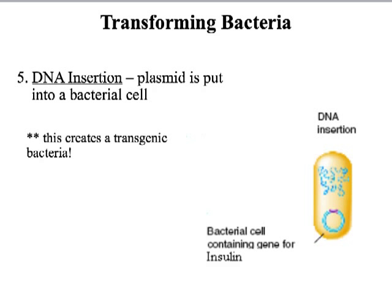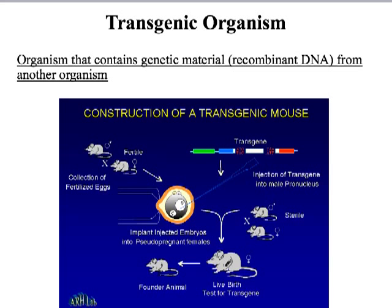After we have cut the plasmid, cut the piece of DNA that we want, and put the DNA into the plasmid, we're ready to insert the plasmid back into the bacterial cell. When we do this, it creates transgenic bacteria. Transgenic — trans means multiple or different, and genic stands for gene — so it's bacteria that contains genes from multiple sources. Similarly, a transgenic organism is any organism that contains genetic material from a different organism.